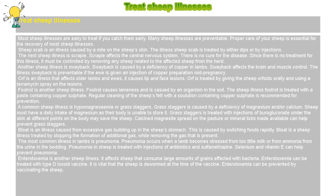The next sheep illness is Scrapie. Scrapie affects the central nervous system. There is no cure for the disease. Since there is no treatment for this illness, it must be controlled by removing any sheep related to the affected sheep from the herd.